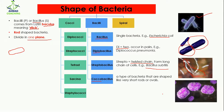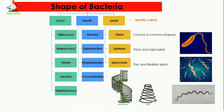Then comes coccobacillus. In the case of coccobacillus, the bacteria are shaped as very short rods. Instead of long rods, they are so short that they look like cocci, which is why they are known as coccobacillus.